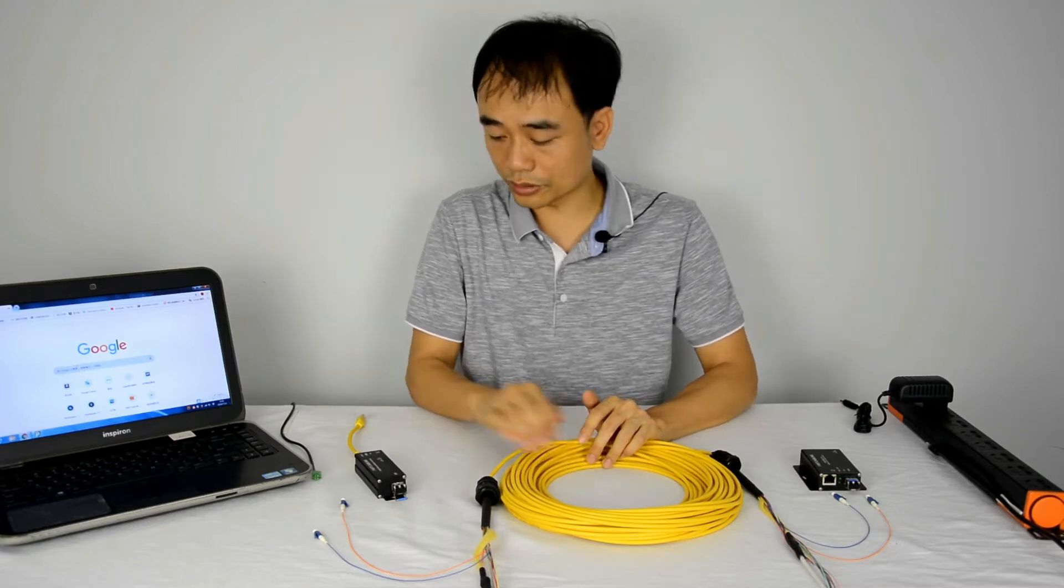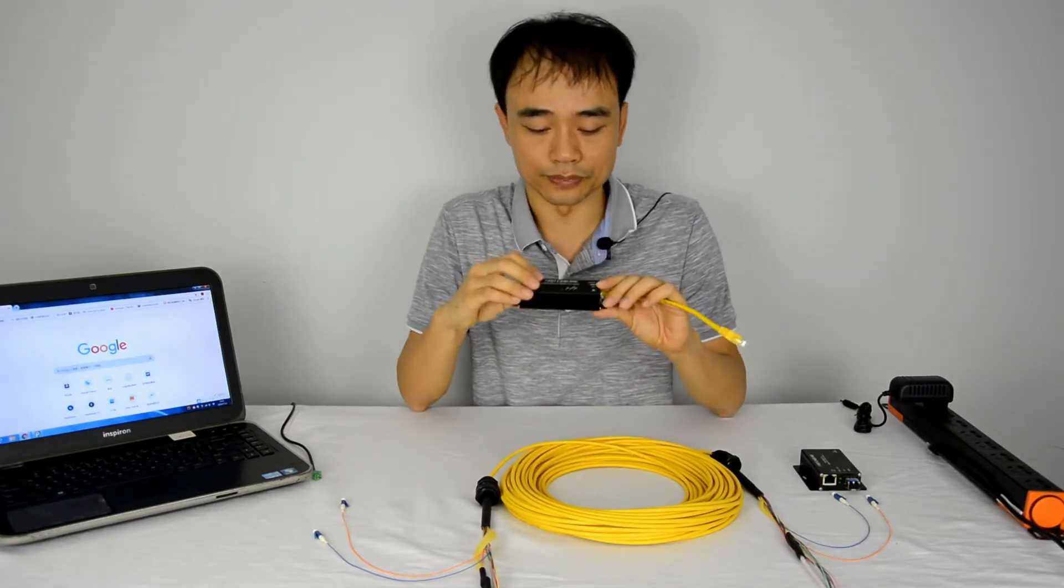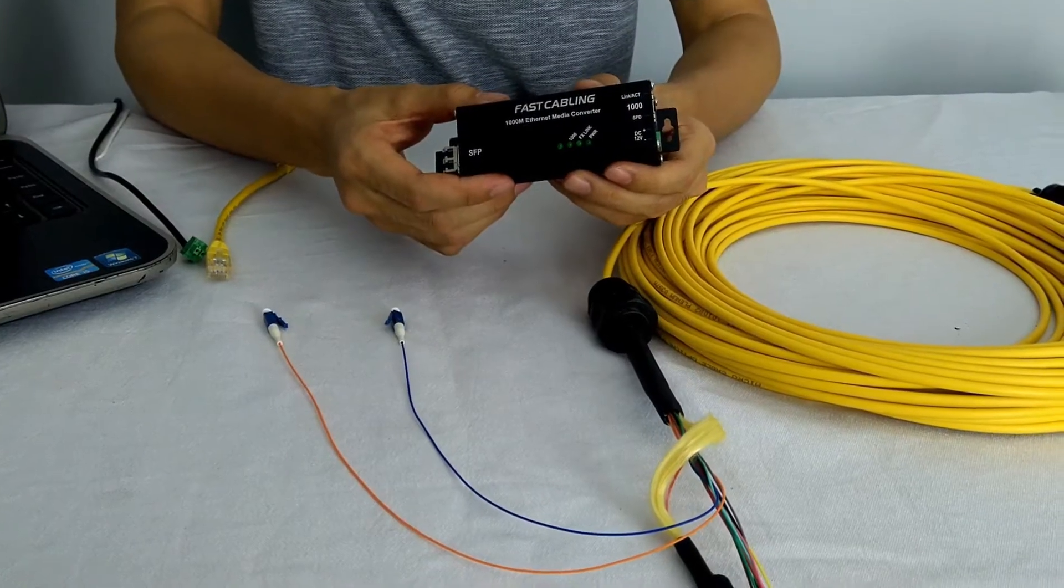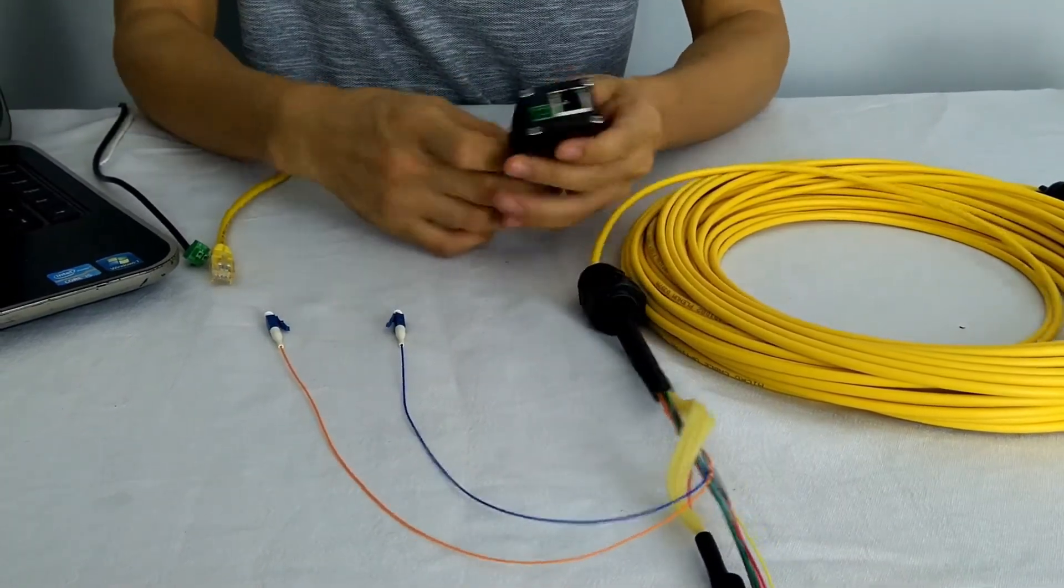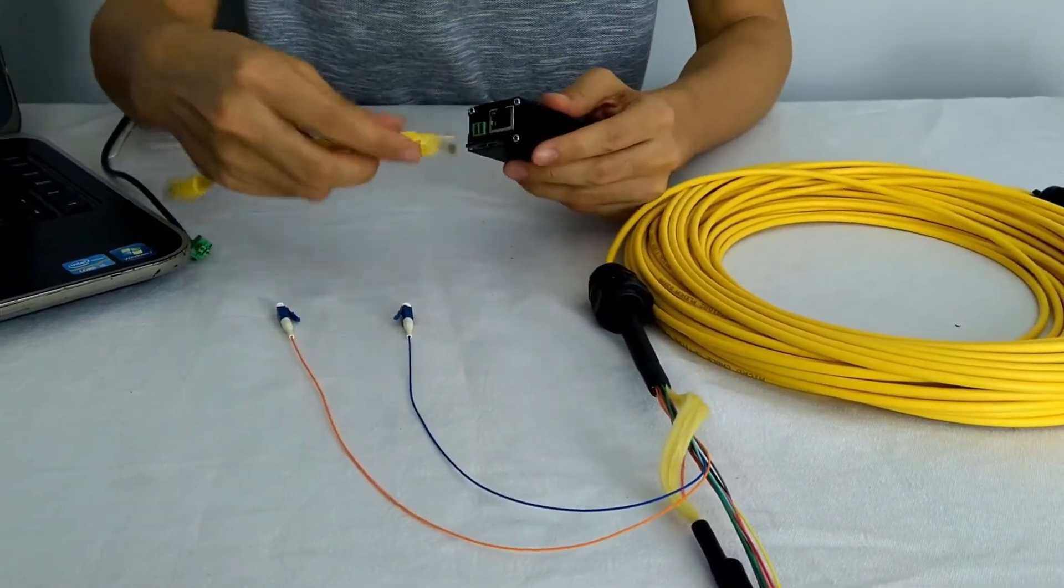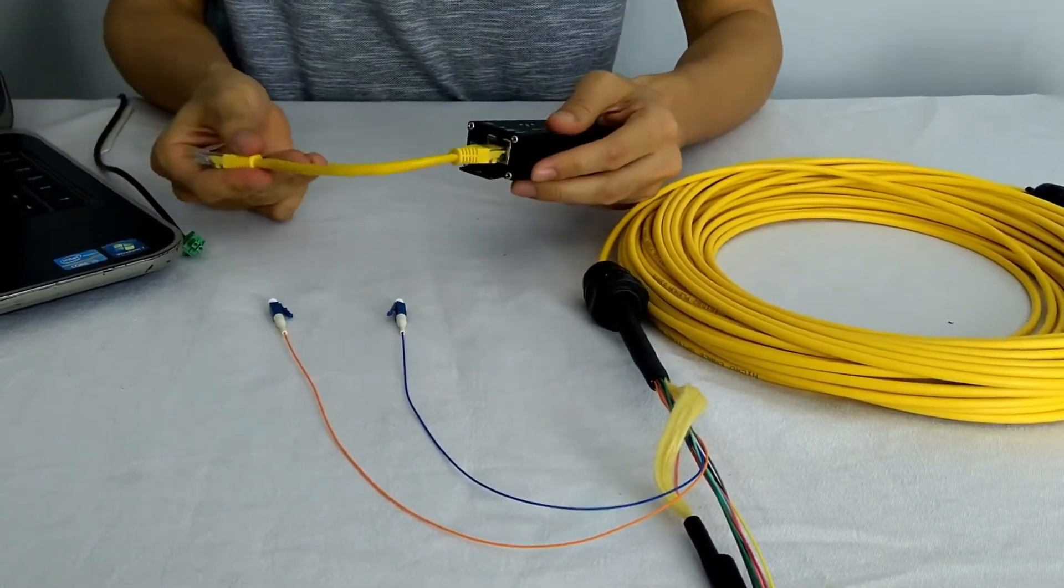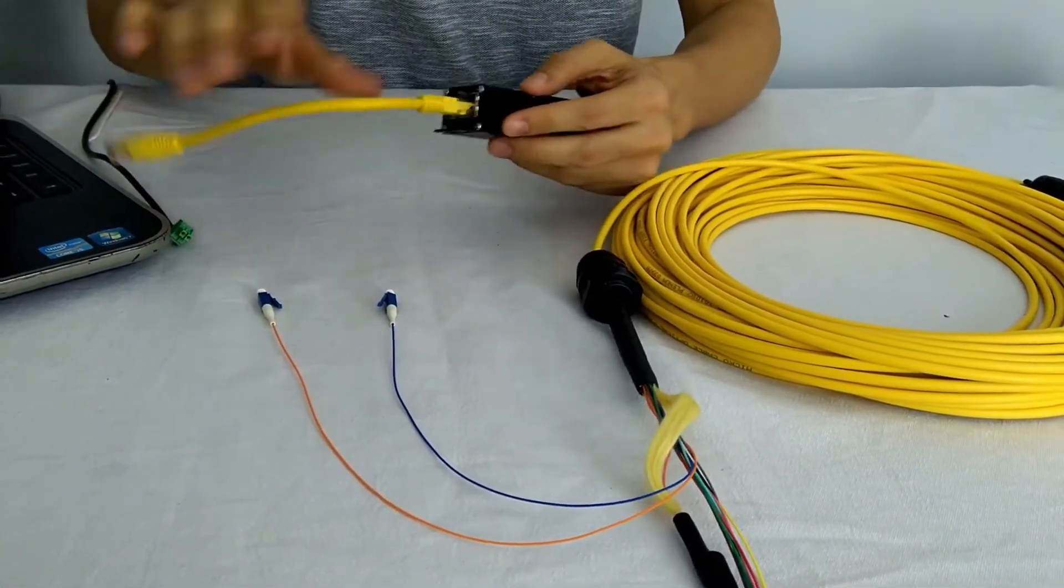In order to use fiber, we will need the media converter. This media converter will convert the light to the electronic signal and output to the RJ45, so we can connect back to the PC computer. We need both in each side.